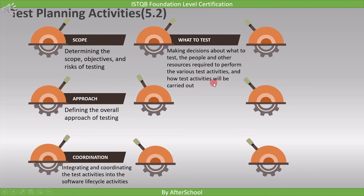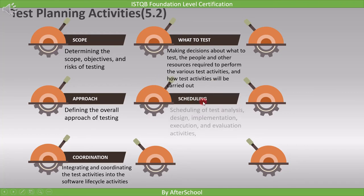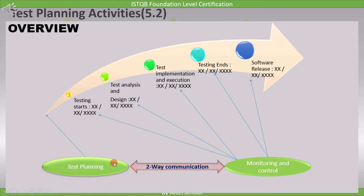The fifth point is related to task scheduling. For example, this is the roadmap prepared during test planning. Here we define when testing will start, when test analysis and design shall be completed, and similarly plan all other test activities.